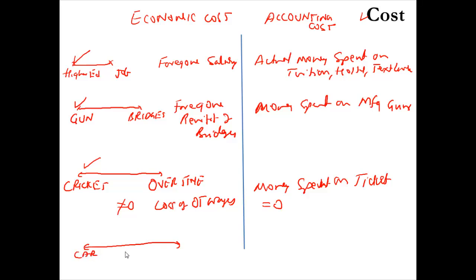If a household chooses car over house, then choosing car, the economic cost is foregone benefit of house. Whereas, the accounting cost is the actual money spent on using car.